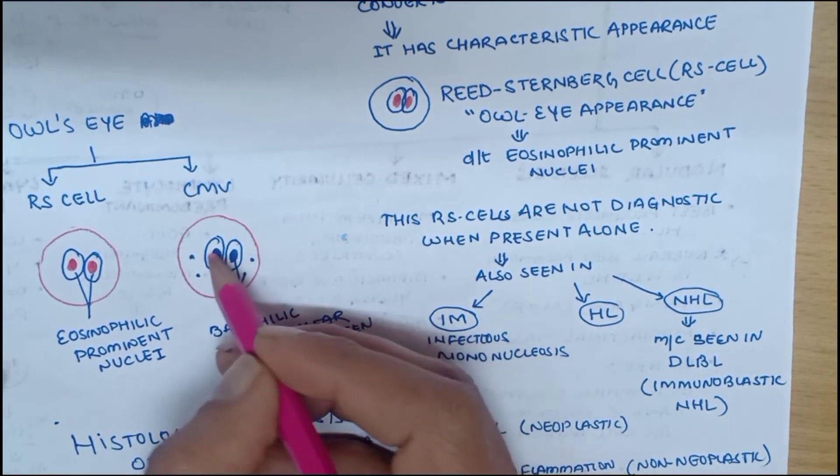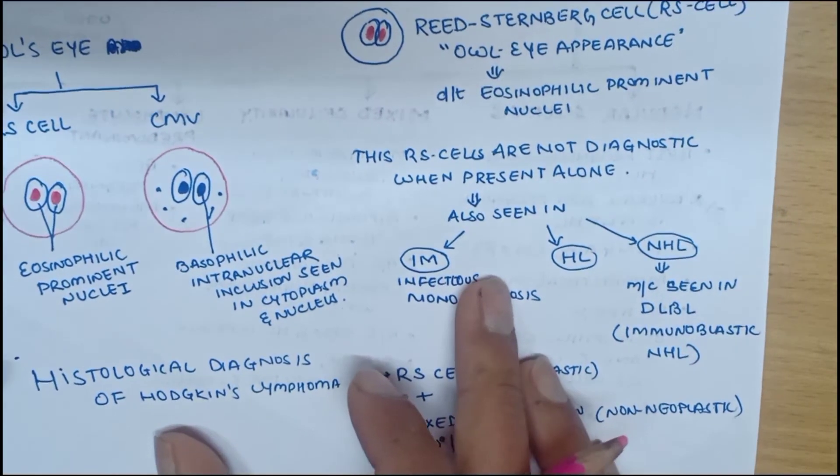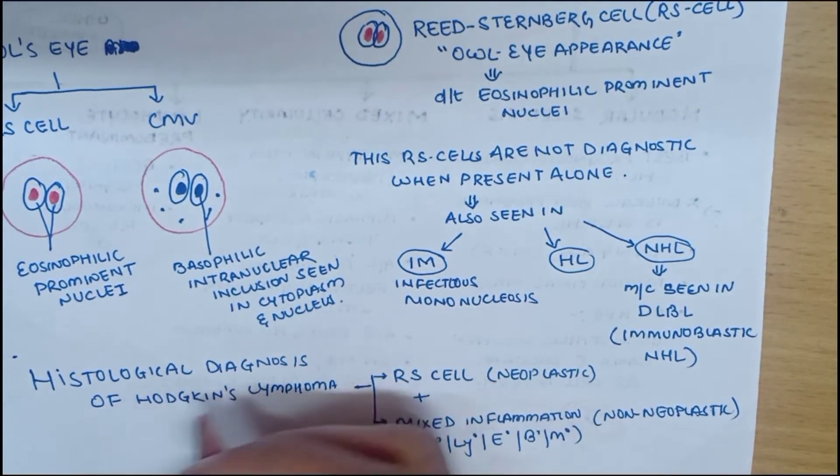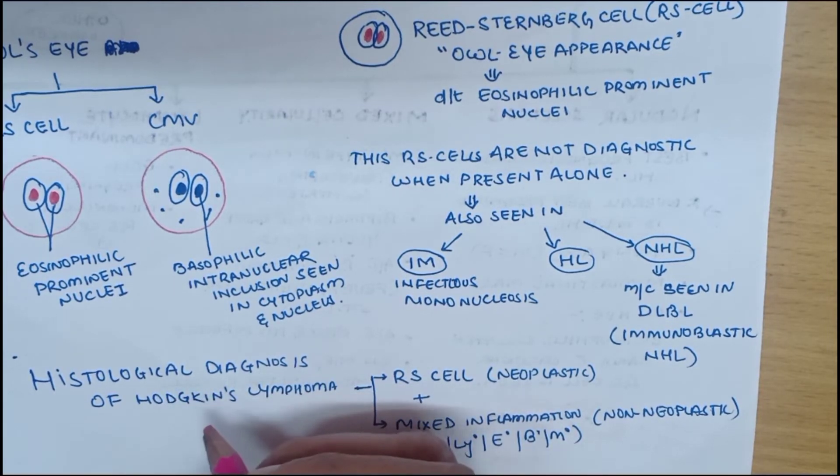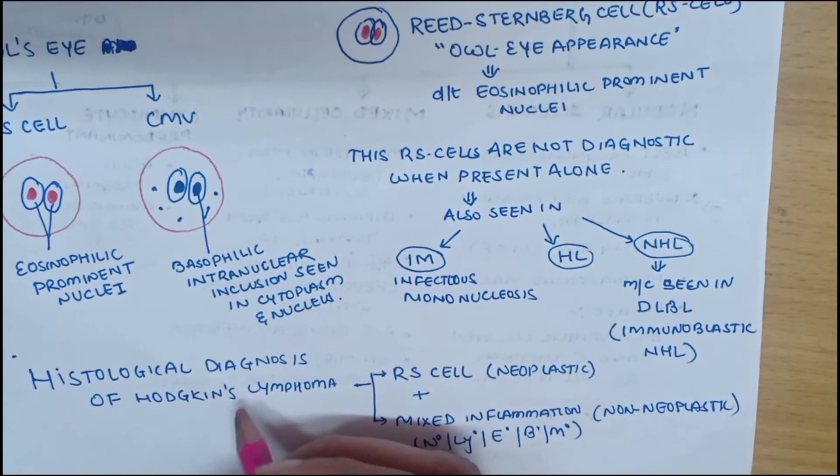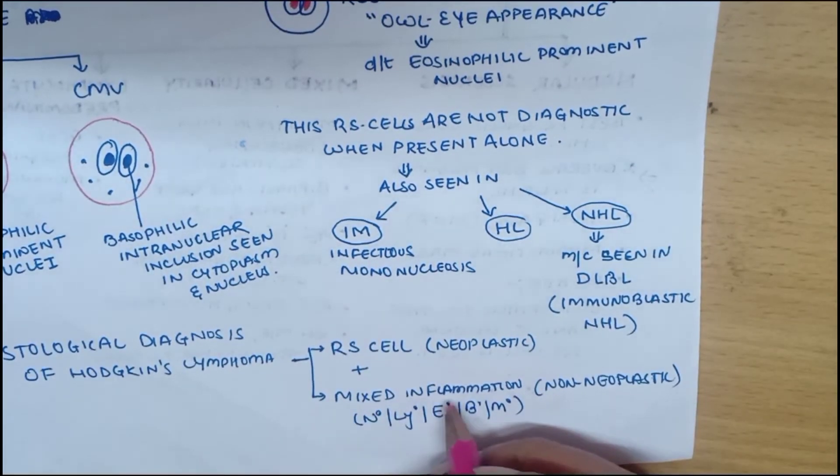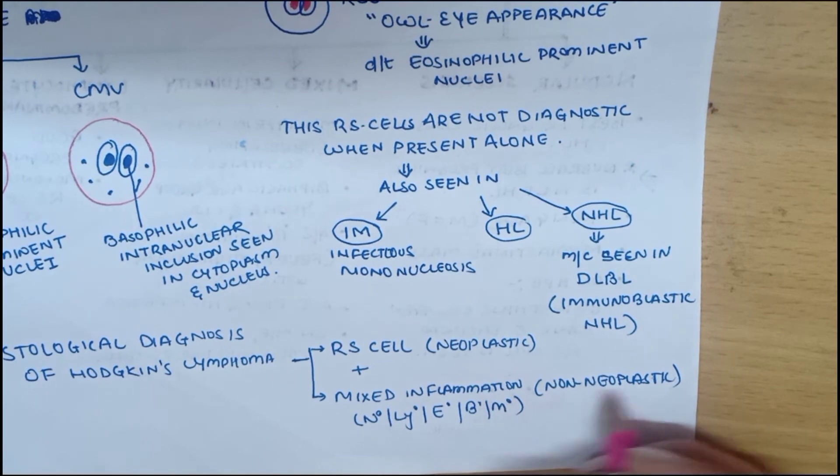So how will you diagnose Hodgkin's lymphoma histologically? Histological diagnosis involves the presence of a Reed-Sternberg cell, which is a neoplastic cell, along with mixed inflammation like neutrophils, lymphocytes, eosinophils, basophils, and monocytes in the background. These are non-neoplastic cells.